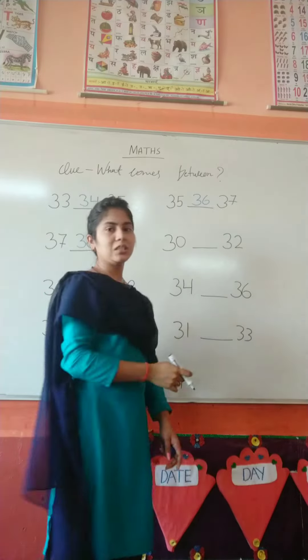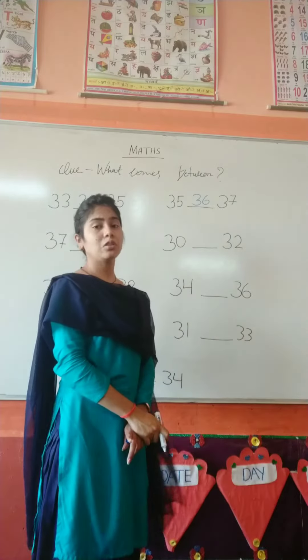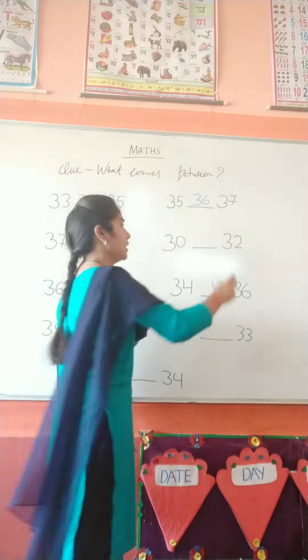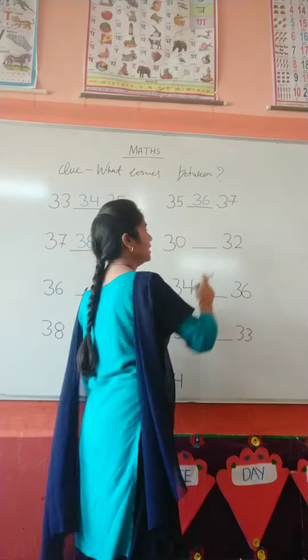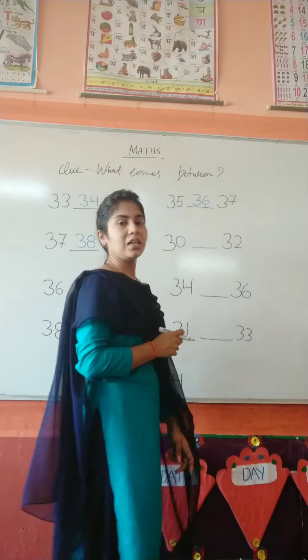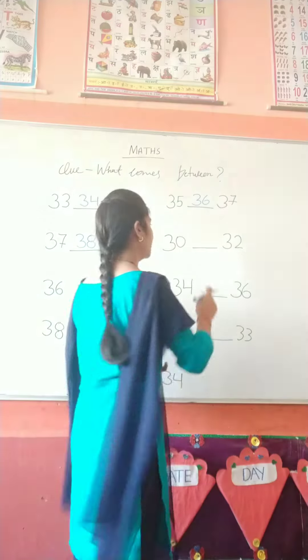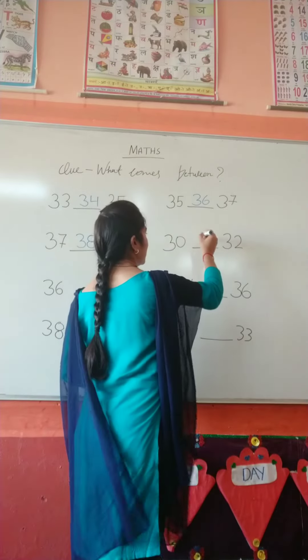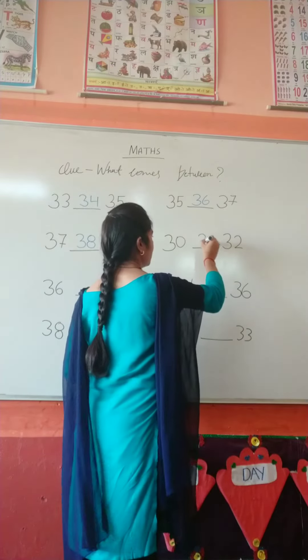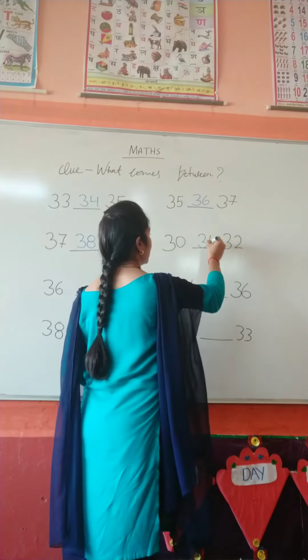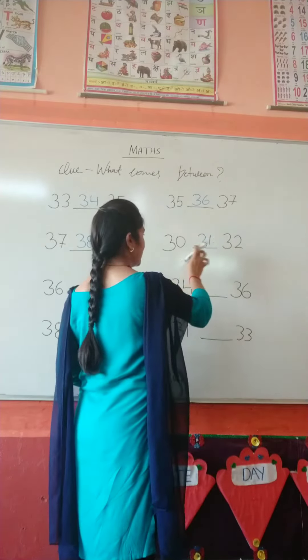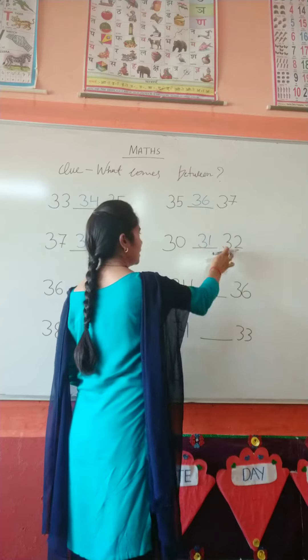Which number is this? 30. And here is 32. What comes between 30 and 32? 31. 30, 31, 32.